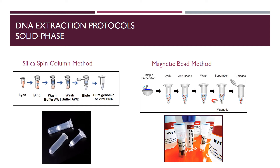Solid phase extraction methods are more common in the clinical lab. Two common types are the silica spin column method and the magnetic bead method. In the silica spin column method, cells are lysed, the DNA is bound to the spin column filter, and the trash proteins are washed out using buffers that don't disturb the bound DNA. The DNA is then eluted out of the filter and collected in a clean tube, yielding pure genomic or viral DNA. The magnetic bead method is similar, except the DNA is bound to magnetic beads, and a magnet is used to separate the DNA from the beads before transferring the pure DNA to a clean tube.